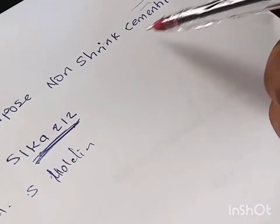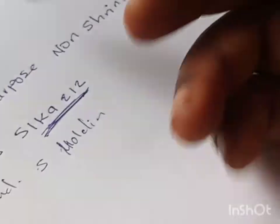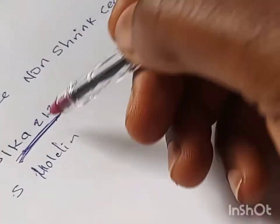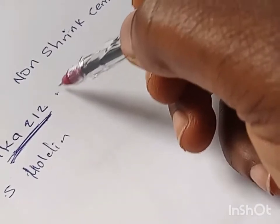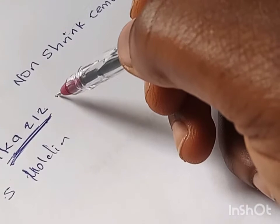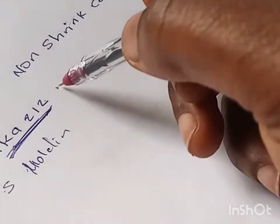We're going to use the general purpose non-shrink cementitious grout, and the make is Sika 212 to be precise. This is used for machine base plates, steel structure foundation, and also for filling voids and cracks.